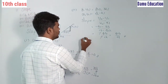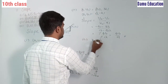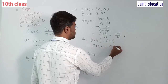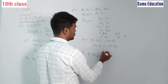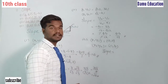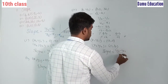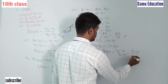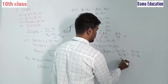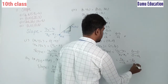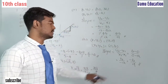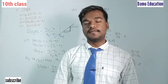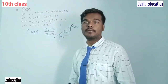For the fourth example, x1, y1 = (a, 0) and x2, y2 = (0, b). Slope = (y2 - y1) / (x2 - x1) = (b - 0) / (0 - a) = b / (-a) = -b/a. So the slope for the fourth example is -b/a.